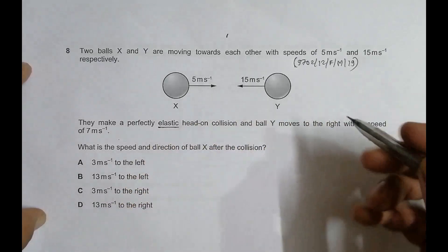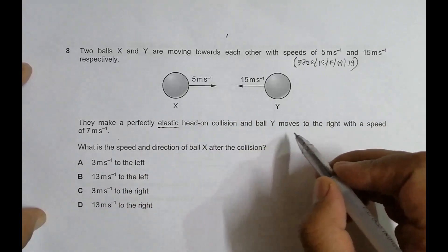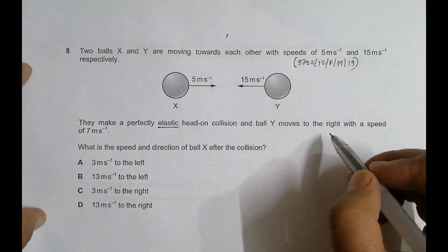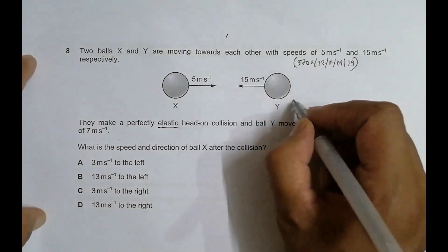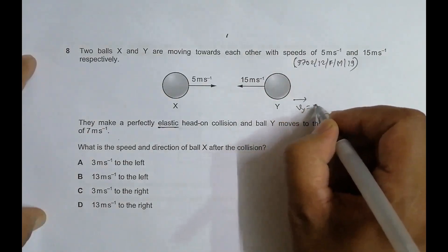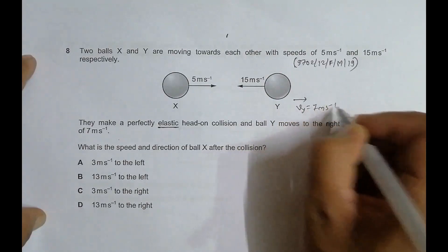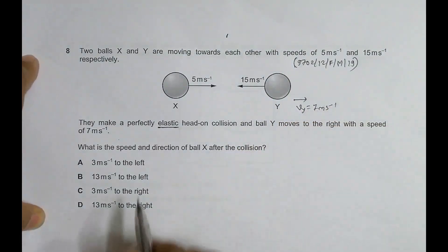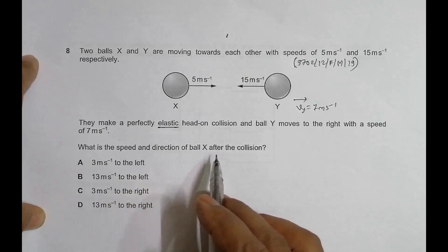Ball Y moves to the right with a speed of 7 meters per second after collision, so v_y equals 7 m/s. The question asks: what is the speed and direction of ball X after the collision? We need to find the velocity of X after collision.